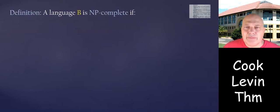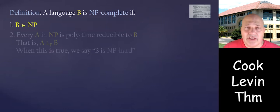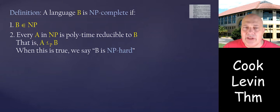So what is an NP-complete problem? Language B is NP-complete if, first, it is within NP, and second, every other problem within NP is polytime reducible to B. So every A in NP satisfies A polytime reducible to B.